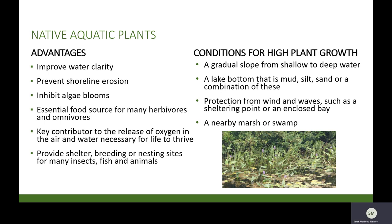Natural variability was observed throughout our study lakes, with areas ranging from 0 to 100% plant biovolume in almost all lakes. The lake environment itself plays a very important role in what type of aquatic community will be established. Areas with gradual slopes from shallow to deep water and a lake bottom that is mud, silt, sand, or a combination of these have much more suitable growing conditions compared to a bedrock slope. Areas that are protected from wind and waves, such as a sheltering point or an enclosed bay, as well as areas with nearby marsh or swamps, are likely to have the conditions necessary to support growth of a robust aquatic plant community.